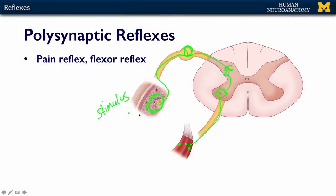The noxious stimulus activates nerve endings in the skin, which travel through the process of the DRG neuron. The DRG neuron carries that information into the spinal cord gray in the dorsal horn and synapses on an interneuron. The interneuron synapses on a motor neuron in the ventral horn, which sends its axon out through the ventral roots into the spinal nerve, innervating a muscle that moves the skin away from the noxious stimulus — be it a sharp stone, fire, or something equally damaging.